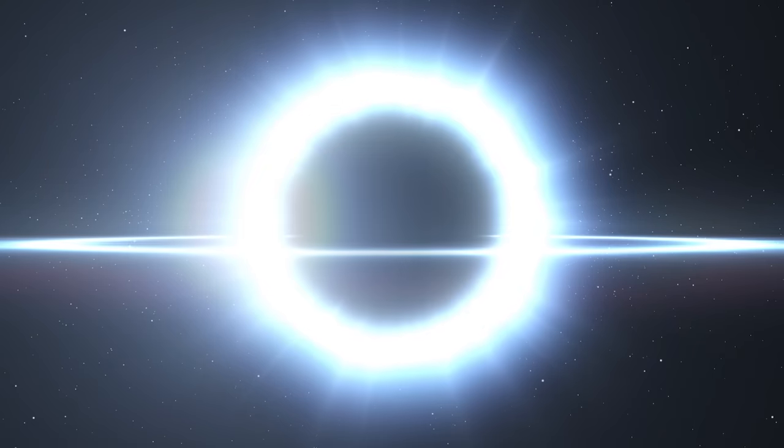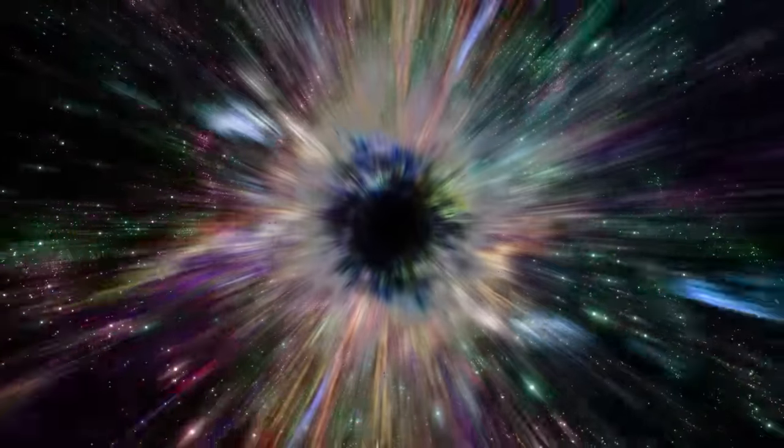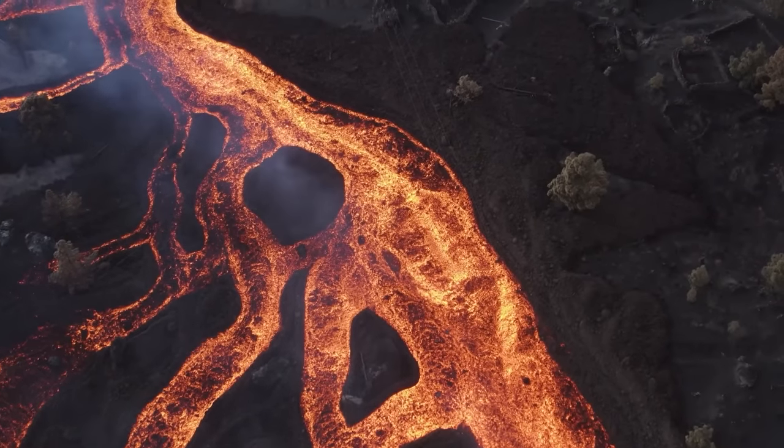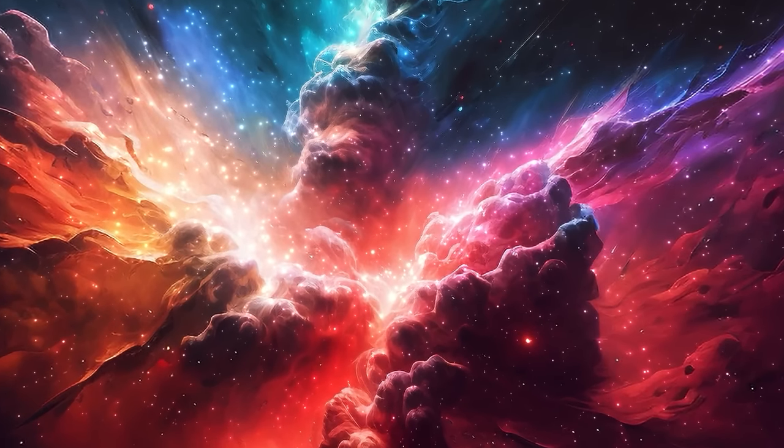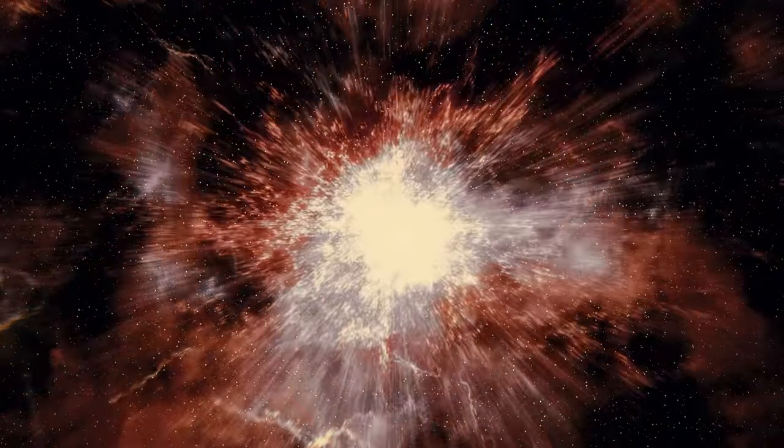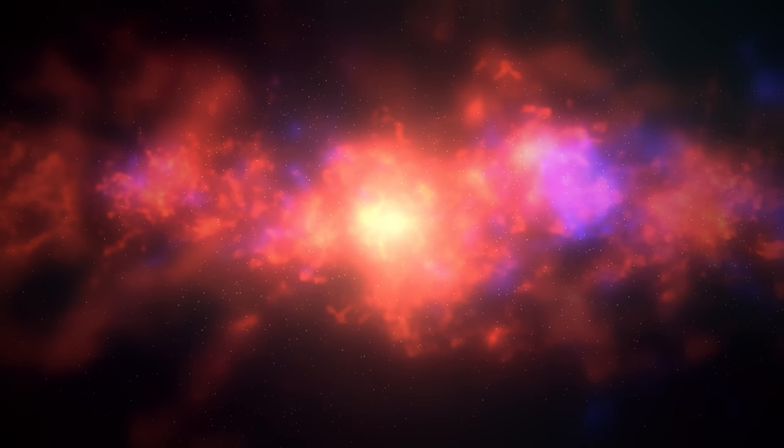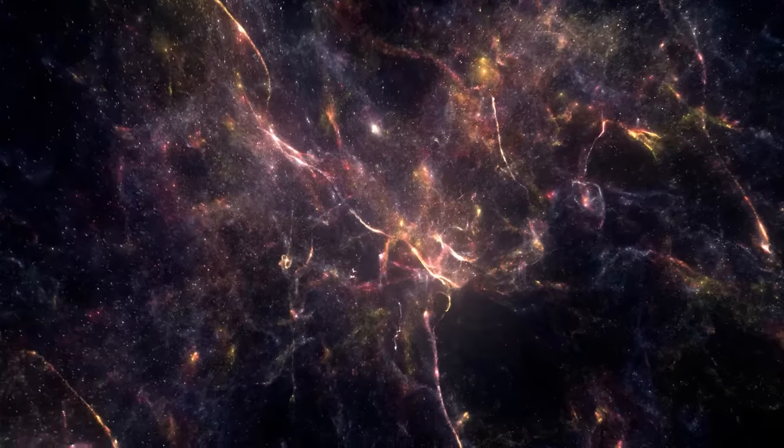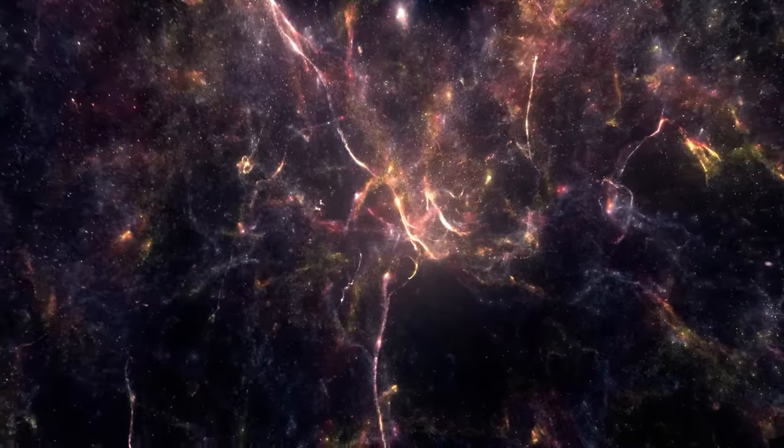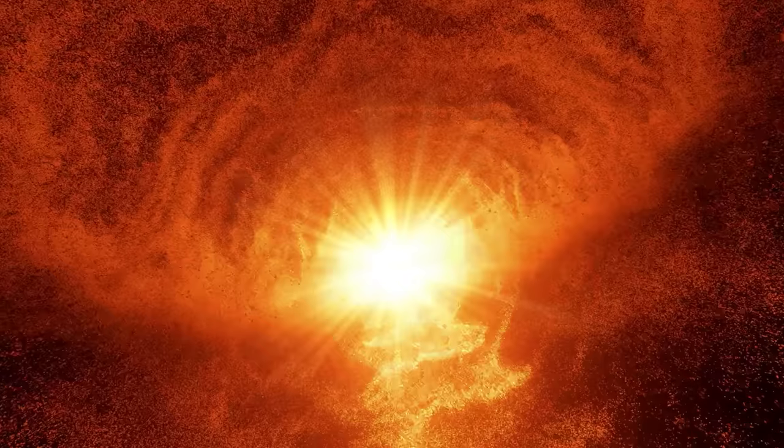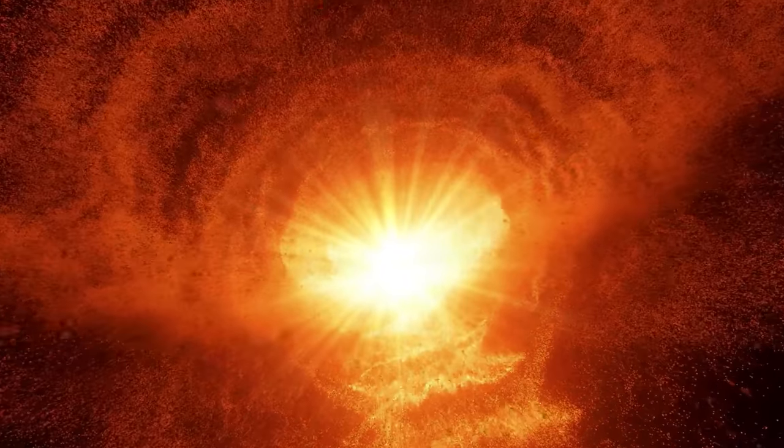Yet this grandeur comes at a price. The more massive the star, the more unstable its life. Many supermassive stars undergo periods of intense pulsations, causing them to eject vast amounts of material into space. This constant tumult makes their surfaces boil and roil with massive convective cells, each one many times larger than our entire sun. Their demise is as spectacular as their lives. Once the fuel in their cores is expended, they can't support their immense gravitational pull, leading to a spectacular supernova explosion. These explosions scatter the heavier elements formed within the star out into space, seeding the universe with the building blocks for new stars, planets and even life. In the end, the legacy of supermassive stars is twofold. They illuminate the cosmos with their unparalleled brilliance, and in their death throes they give back, ensuring the cycle of stellar birth and rebirth continues.